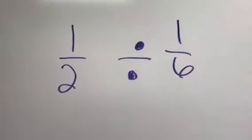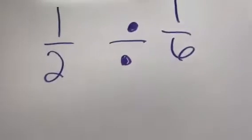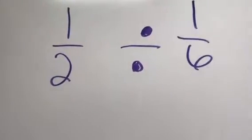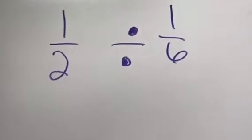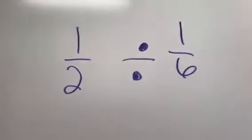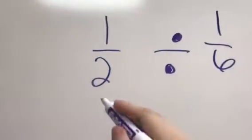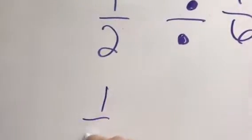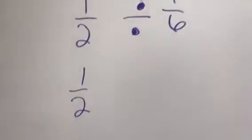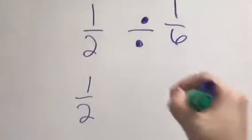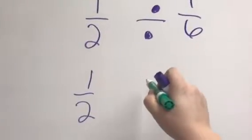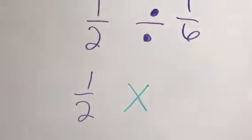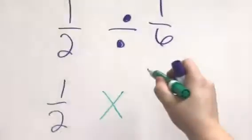Dividing fractions is a little bit different because you end up multiplying, but there's a process you have to do before you multiply. It's called keep, change, flip, and what that means is this first thing, you're going to keep it exactly the same. And then the second thing, you're going to change it to multiply, and the third thing, you're going to flip it.